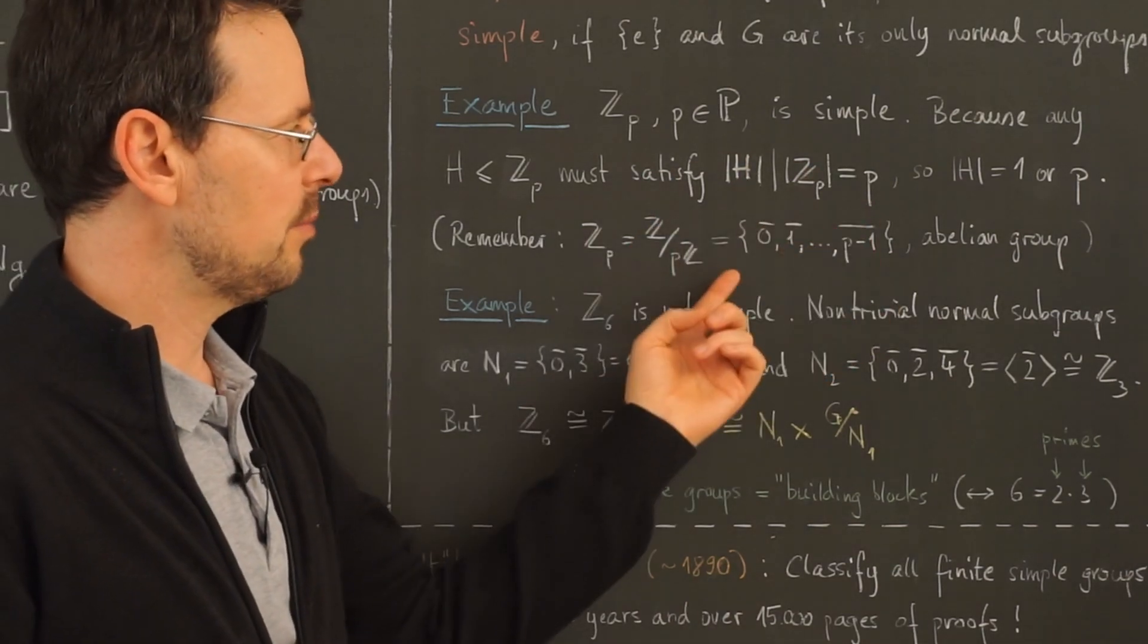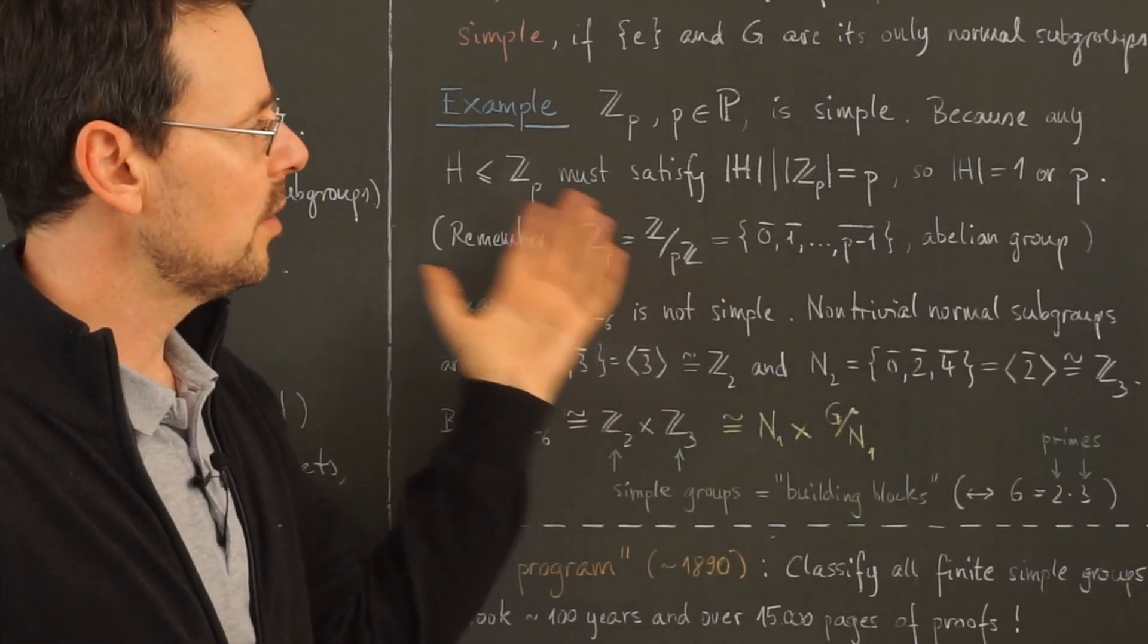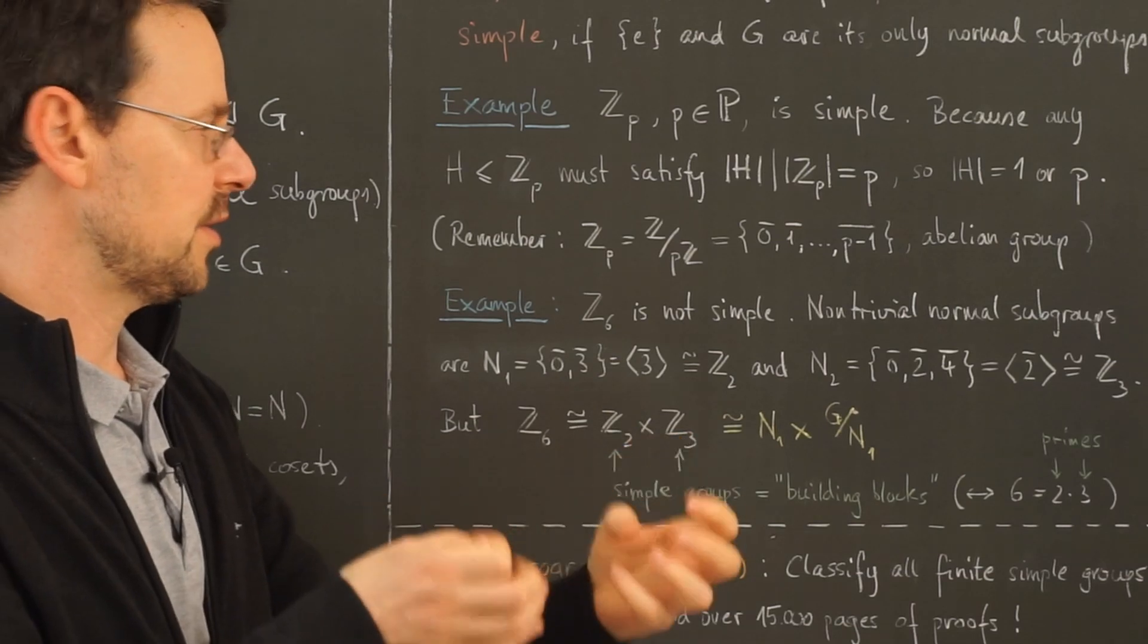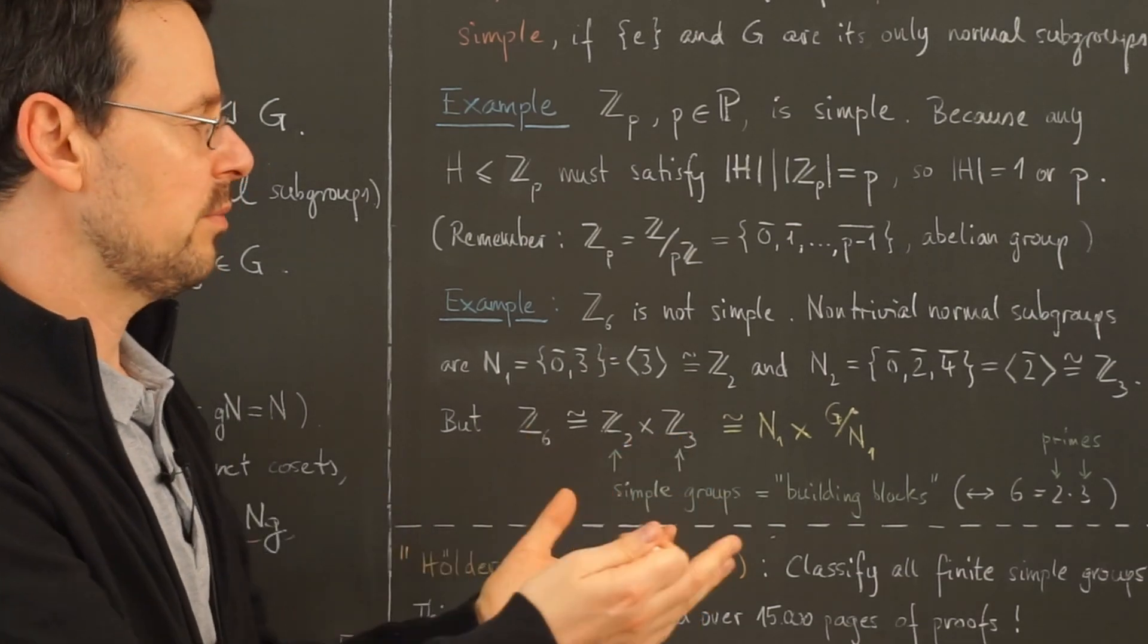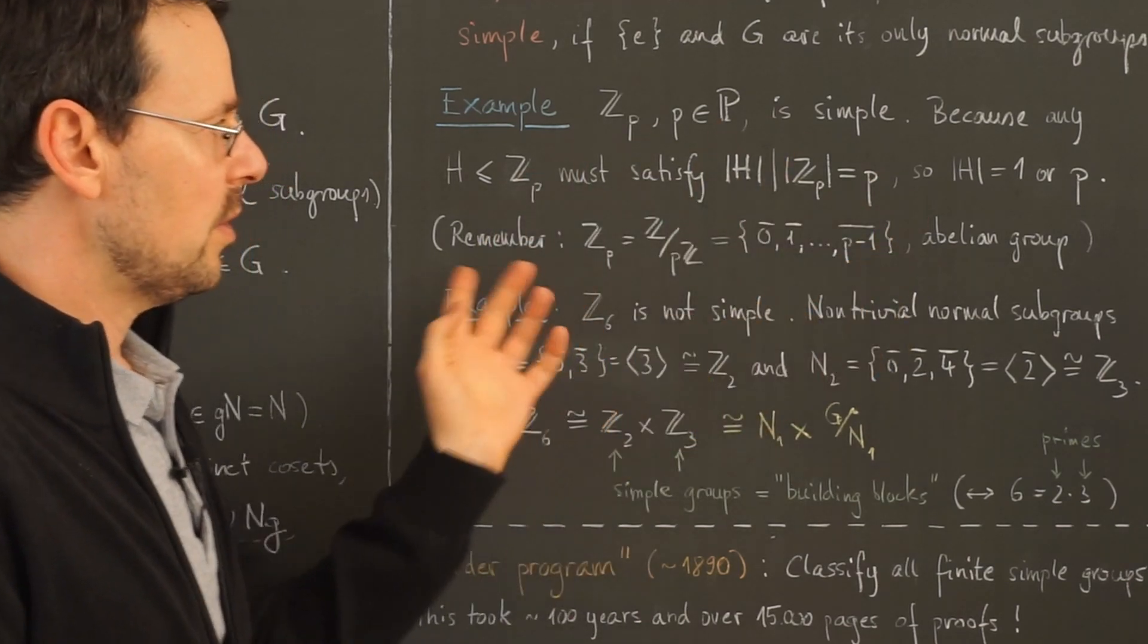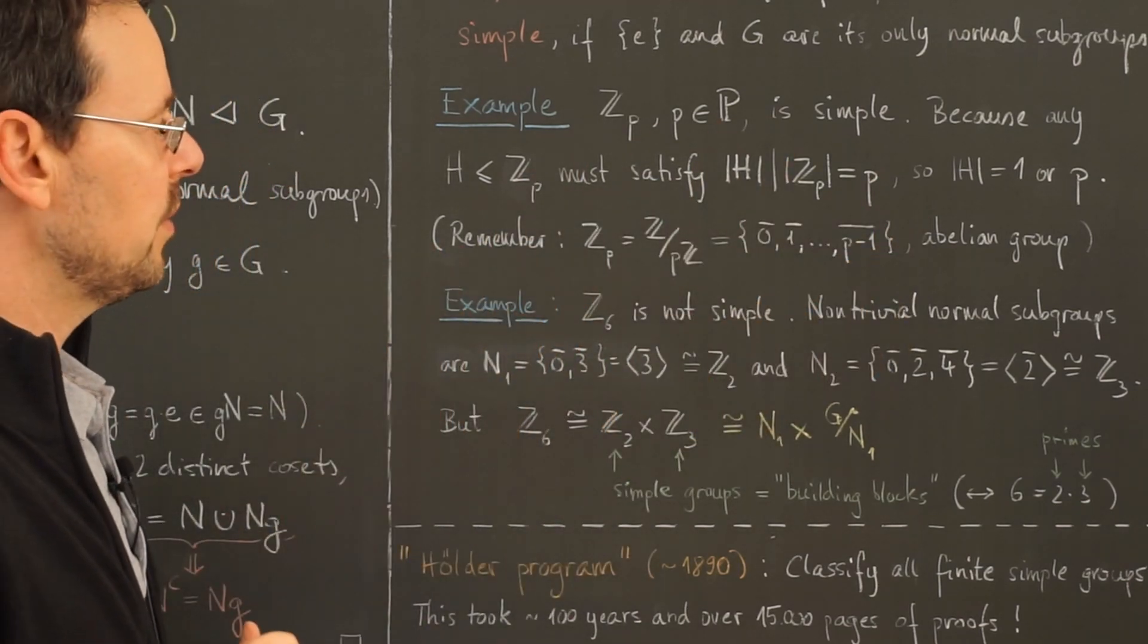This is an example of an abelian group of order p. With the natural addition you simply add such residue classes by adding the representatives and then taking the residue class. If you've watched all the videos so far you should be pretty familiar with that.